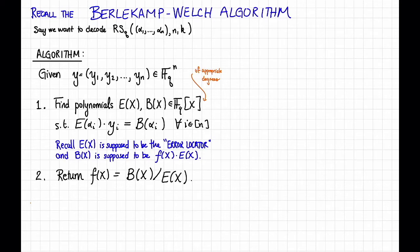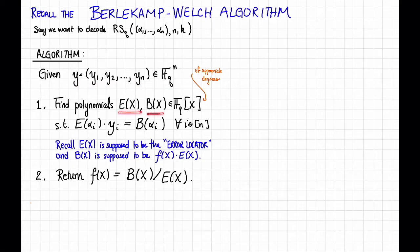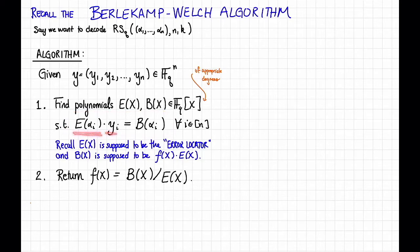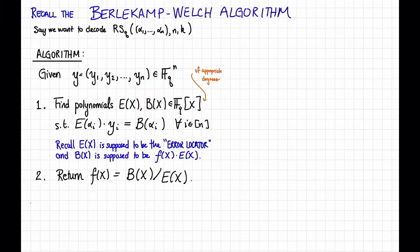So suppose that we have some Reed-Solomon code. Remember that this is how the Berlekamp-Welch algorithm worked. If we were given some received word y in F_q to the n, the first step was to find some polynomials e(x) and b(x) over F_q of appropriate degrees so that e(alpha_i) times y_i is equal to b(alpha_i) for all i from 1 to n. Recall that e(x) is meant to be the error locator polynomial, so it vanishes whenever y_i disagrees with the correct answer f, and b(x) is meant to be f(x) times e(x). In the previous video, b was called q, but I'm going to want to name something else q shortly, so I've renamed it to b.